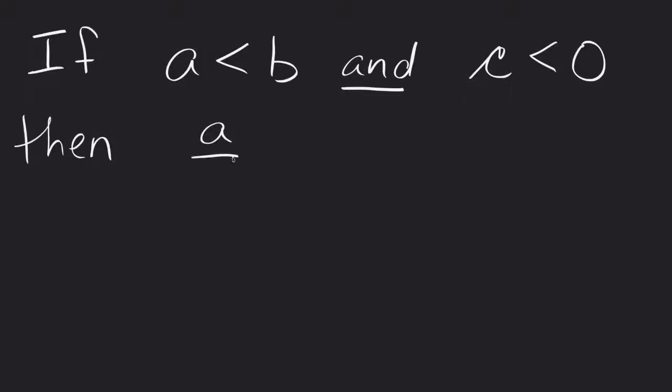So in this case, what this says is if I'm given that a is less than b, and I'm still given the fact that c is less than 0, so I've got a negative number now, then once I divide, the inequality will change direction.